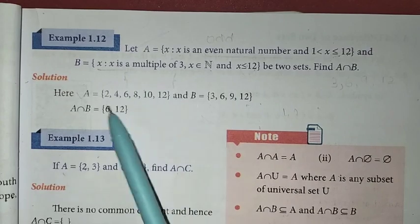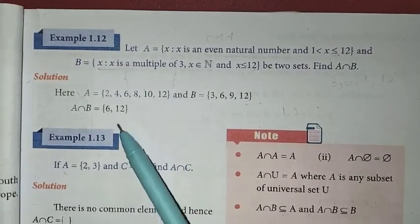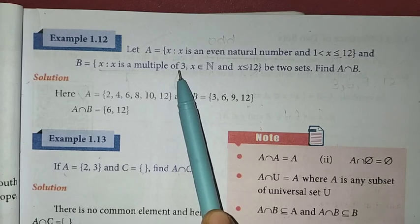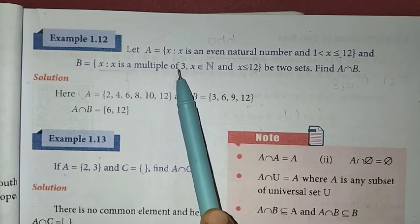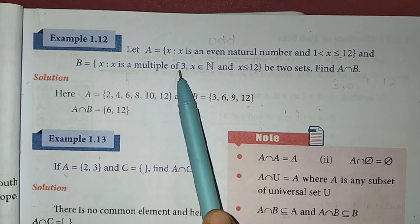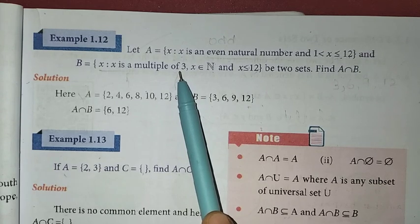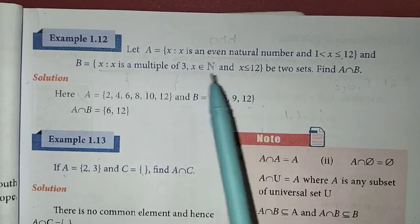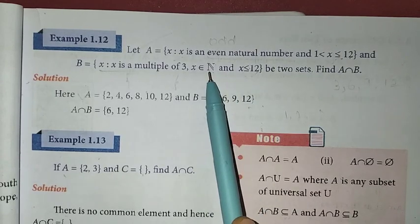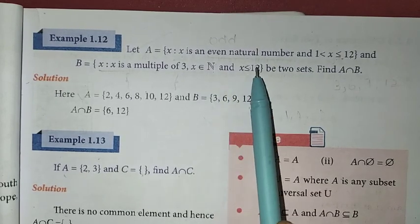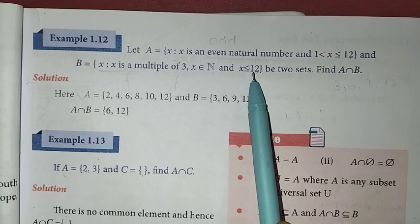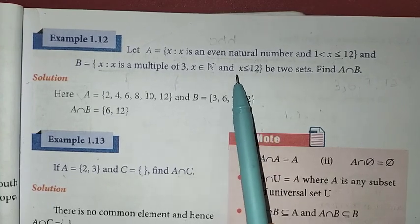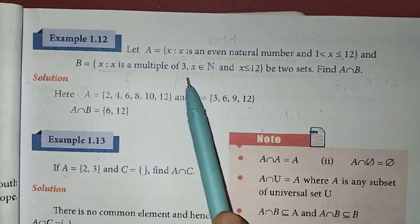Now for set B, x is a multiple of 3. Multiples of 3 are 3, 6, 9, 12, and so on. x belongs to natural numbers, and x ≤ 12, so we include values up to and including 12.